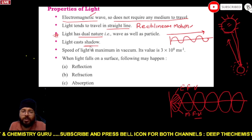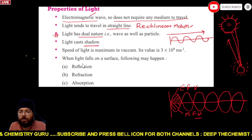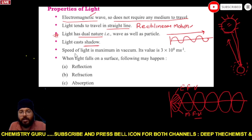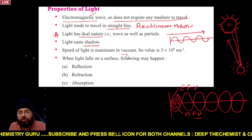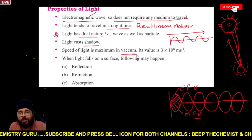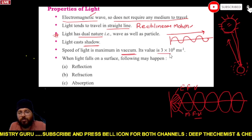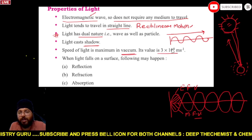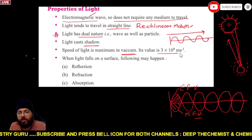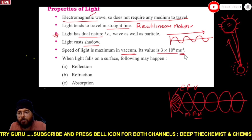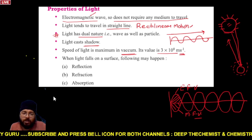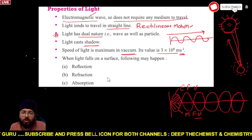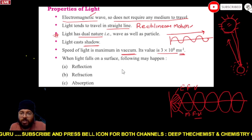Light always forms a shadow. The speed of light in vacuum is maximum — its value is 3 × 10⁸ meters per second, which is the unit of velocity.